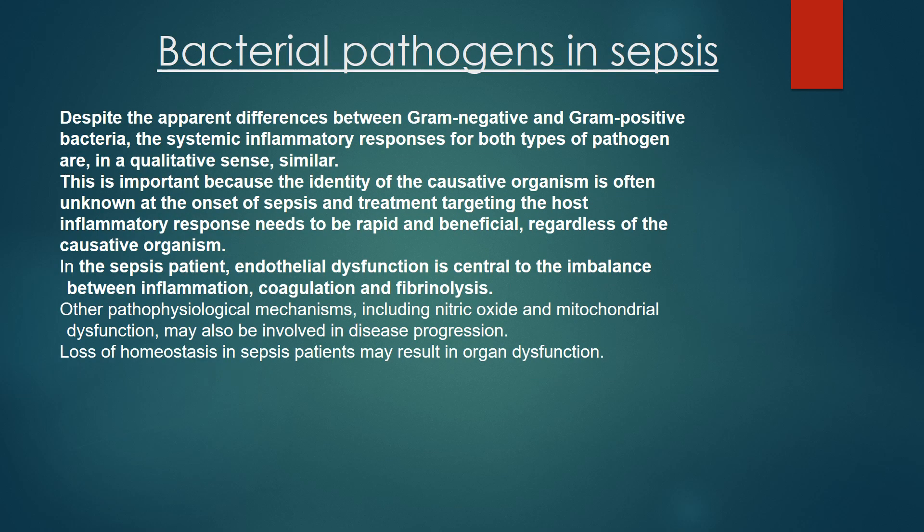Examples include gram-positive shock like Staphylococci and Streptococci, secondary to fluid loss caused by exotoxin. Gram-negative shock like E. coli, Klebsiella, Proteus, and Pseudomonas, secondary to vasodilatation caused by endotoxin such as lipopolysaccharides. Neonates: GBS, E. coli, Listeria monocytogenes, Haemophilus influenzae. Children: Haemophilus influenzae, Pneumococcus, Meningococcus.